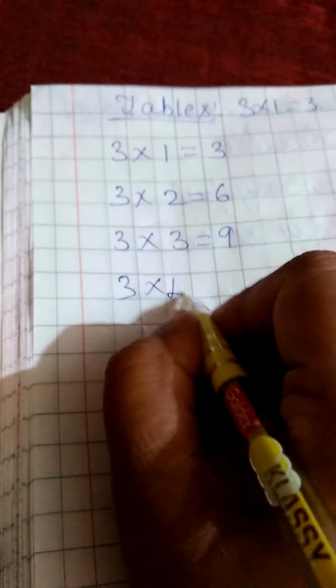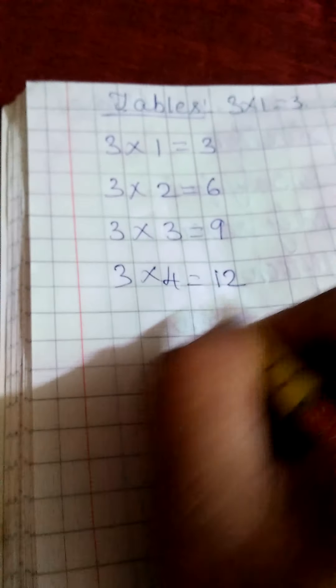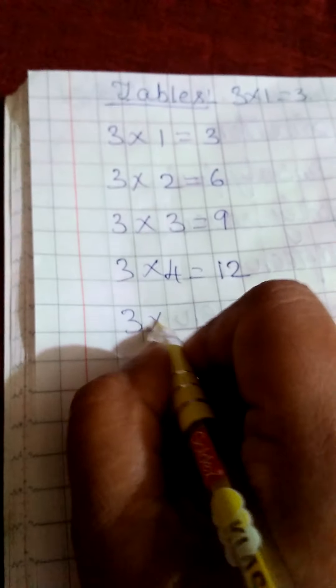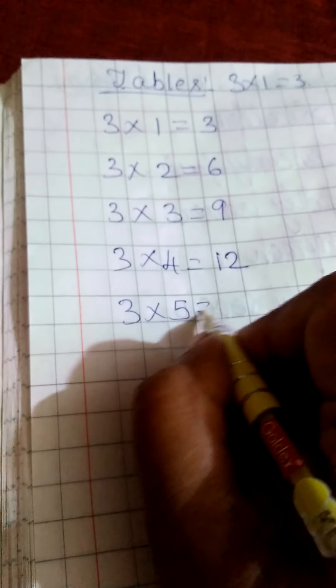3 twos are 6, 3 threes are 9. 3 fours are 12. 3 fives are 15.